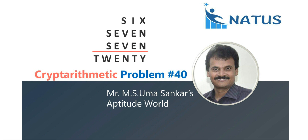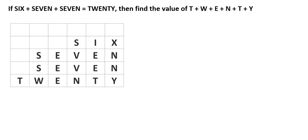Hello everyone, welcome to Natus and Aperture World. This is the 40th problem of crypt arithmetic edition: 6 plus 7 plus 7 is equal to 20. Find the value of 20 — that is, the sum of these letter values. If you observe, 6, 7, 7 equals 20.